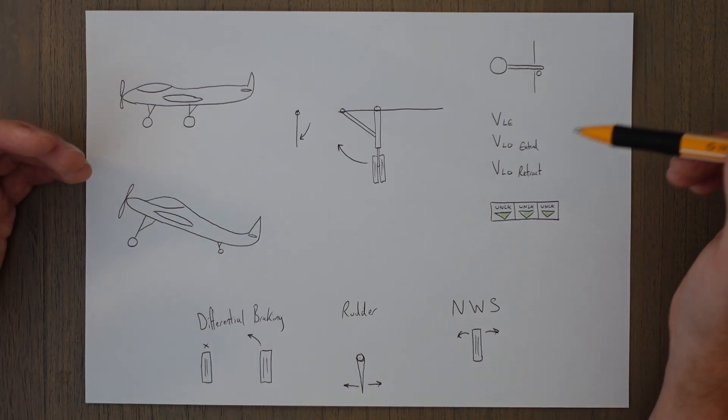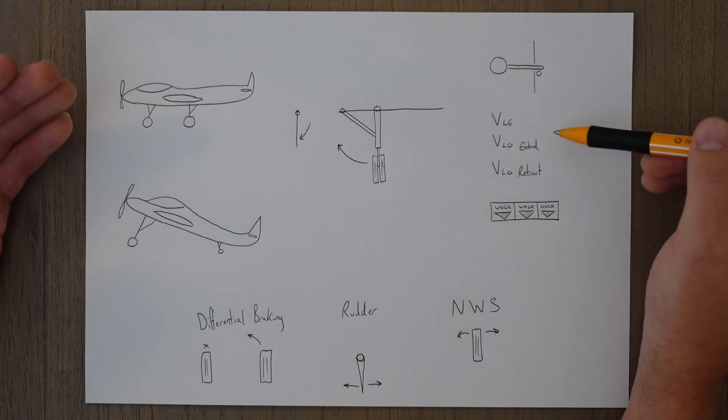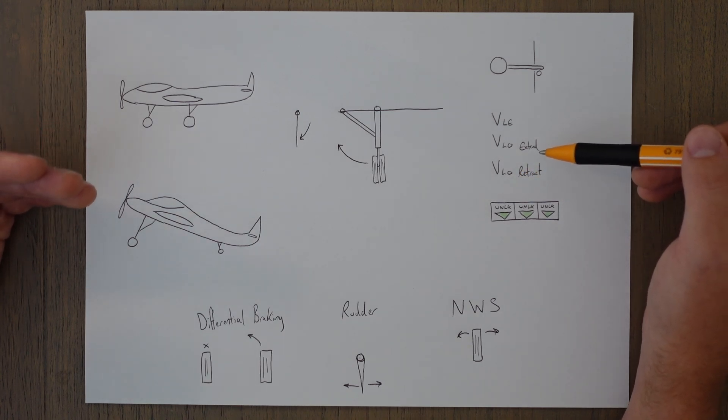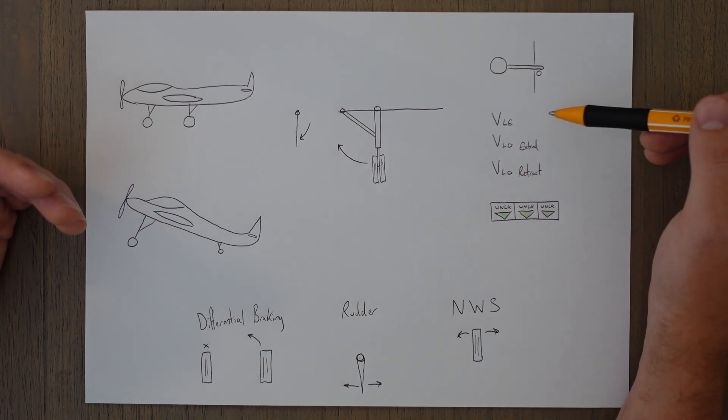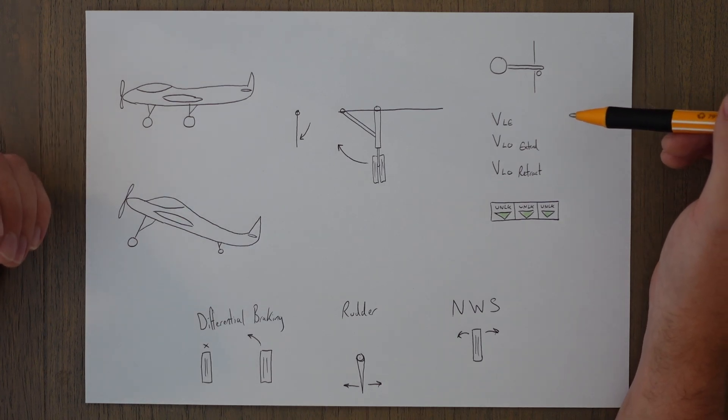To move the gear, we have to make sure that we are below the VLO to retract or extend it, and when we're flying around, we have to make sure that we're always below VLE when we have the gear extended.